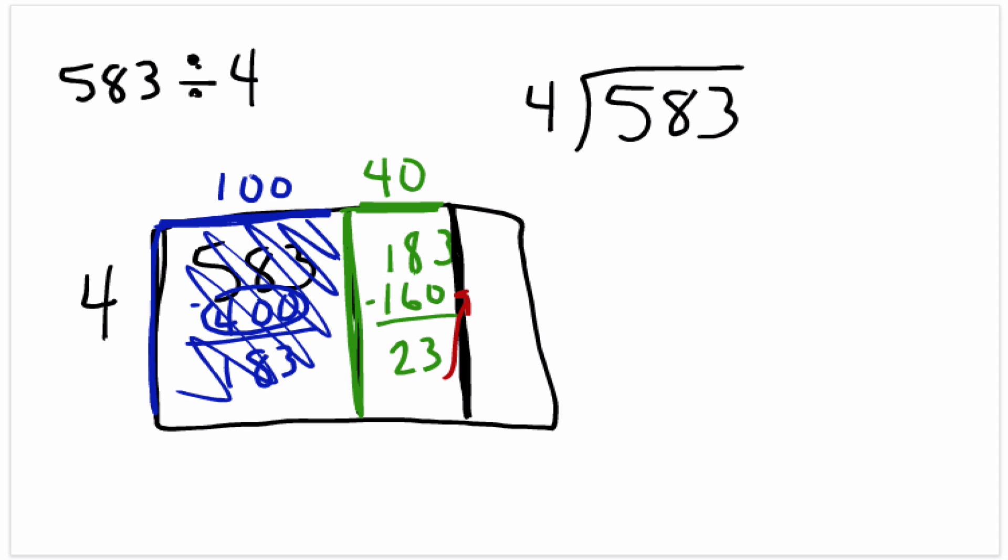So that means right here, the area of this skinny little rectangle is 23. And so we know that this piece right here has 160. So this big rectangle over here is 400. This rectangle right here has an area of 160, and we know this last rectangle has an area of 23.